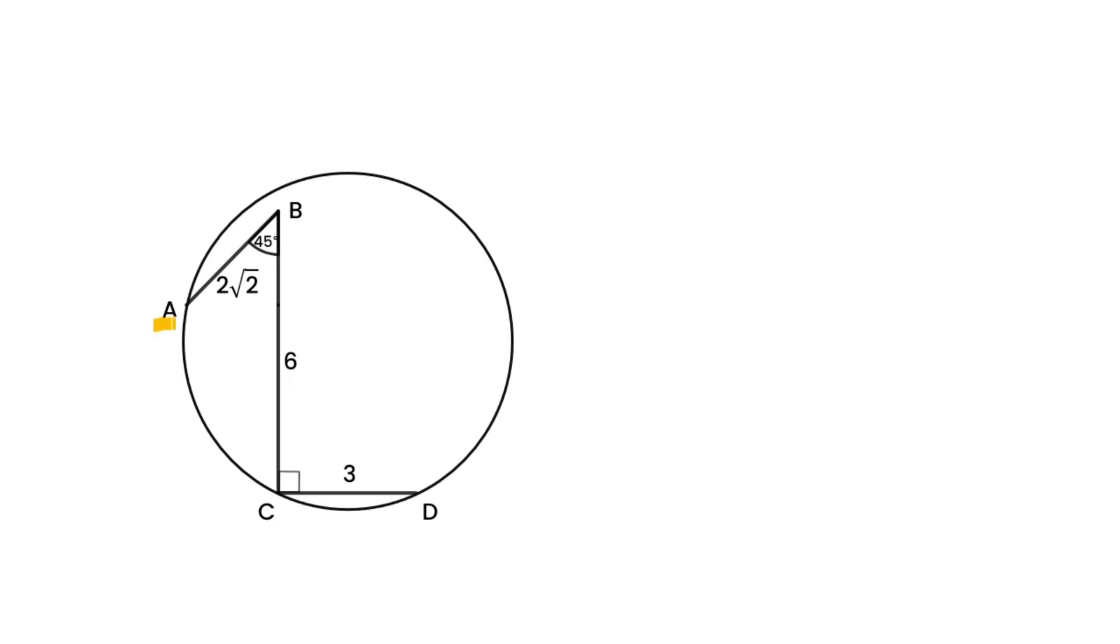We have points A, C, and D on a circle. The value of segment AB is 2 times the square root of 2, BC is 6, and CD is 3.